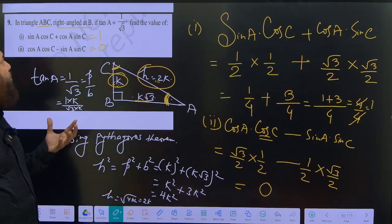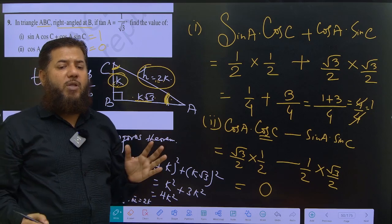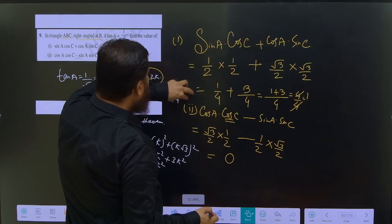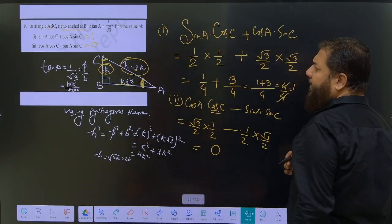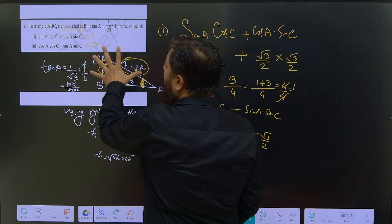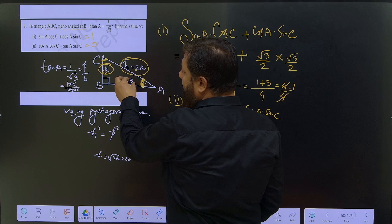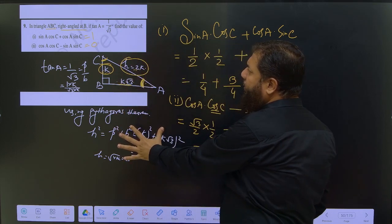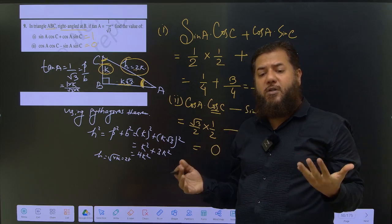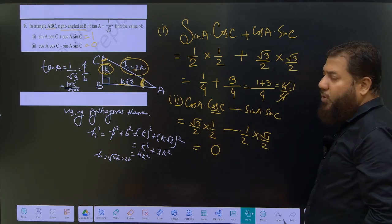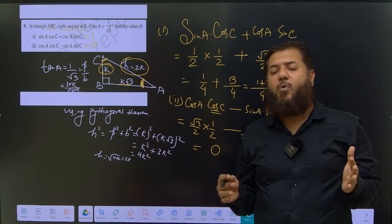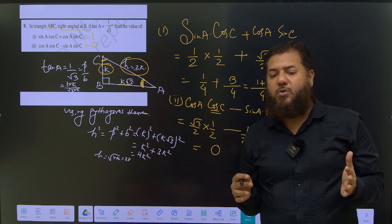So in this way we have solved question number 9. This is a very easy solution — just draw the triangle, find the base and perpendicular, use the Pythagorean theorem to get the hypotenuse, and then apply the trigonometric ratios. The more you practice, the more confidence you will gain. Thank you, friends.